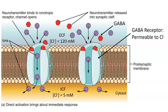If you said hyperpolarize, you're right. When GABA binds to its receptor, the channel opens and is permeable to chloride. Due to the concentration gradient, chloride moves into the cell. Since chloride is negatively charged, it will make the interior of the membrane more negative, therefore resulting in hyperpolarization.